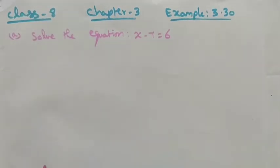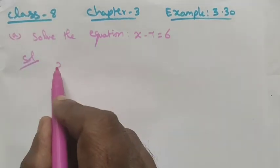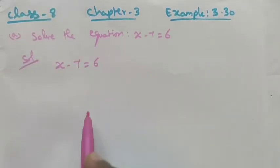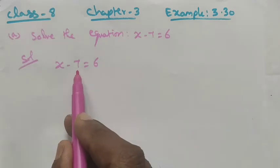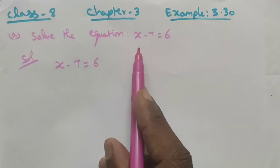Solve the equation x minus 7 equals 6. For this solution, we use the transposition method which is very easy to find the value. Transposition means terms on the left-hand side should be taken to the right-hand side.